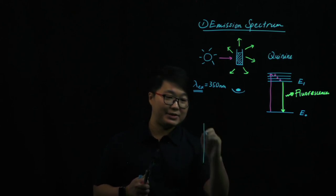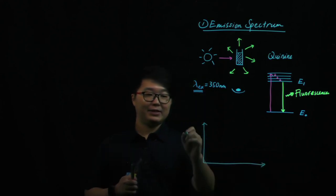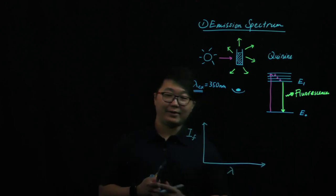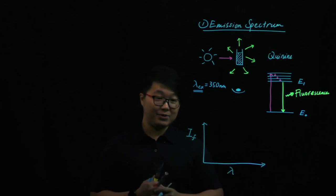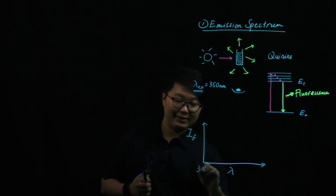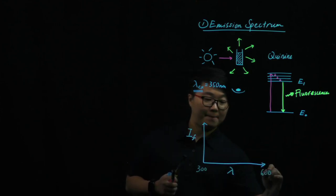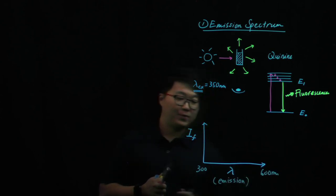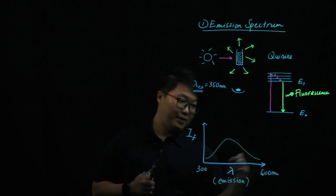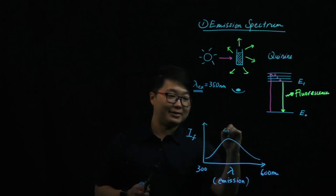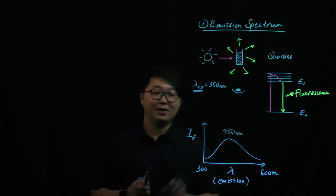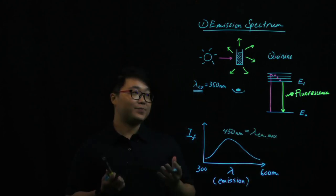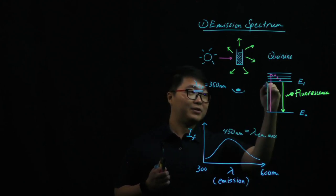So we use this arbitrary wavelength to excite our sample. The typical emission spectrum of crinine will look something like this: the Y-axis is the fluorescence intensity and the X-axis is the wavelength — specifically the emission wavelength that we measure. If we set it to scan from 300 nm to 600 nm, we will get an emission wavelength peak for crinine. For example, let's say we find that this peak is about 450 nm. This is the emission peak for crinine, which corresponds to a particular energy gap for the fluorescence emission.